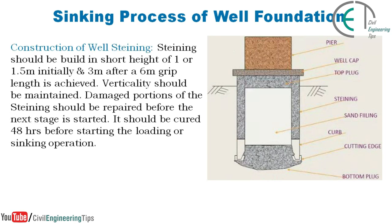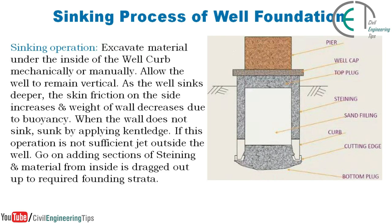The second step of the sinking process is construction of well steining. Steining should be built in short heights of 1 or 1.5 meters initially, and 3 meters after a 6-meter grip length is achieved. Verticality should be maintained. Damaged portions of the steining should be repaired before the next stage is started. It should be cured for 48 hours before starting the loading or sinking operation.